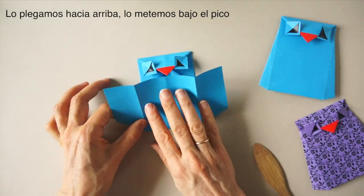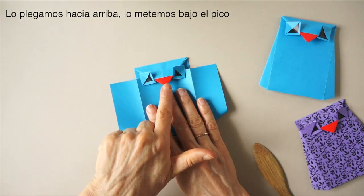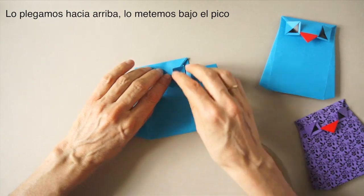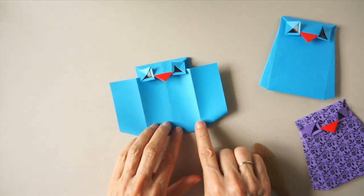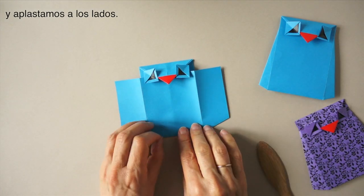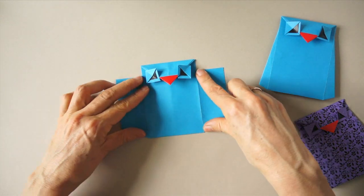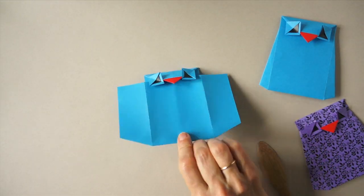We follow those lines, bring the flap up, tuck it underneath and flatten on these sides. Turn it over.